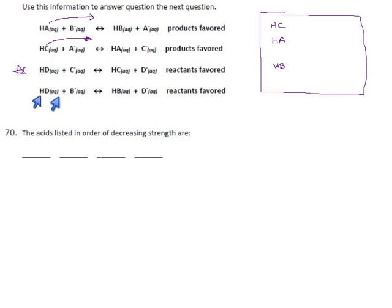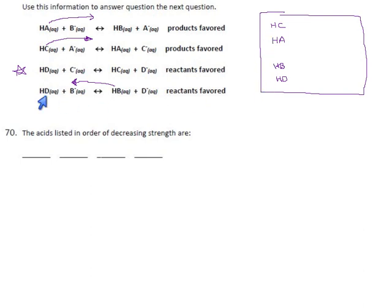D and B fight, and the reactants are favored, so this reaction goes to the left. That means acid B is stronger than acid D. So HD is all the way at the bottom. It turns out we didn't need that starred one — it told us D was lower than C, which is not a surprise. The last comparison told us exactly where D goes: it's the lowest of all four. So the acids in order of decreasing strength: HC is the strongest, HA is next, after that is HB, and the weakest acid is HD.